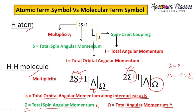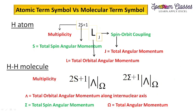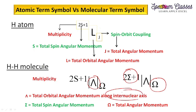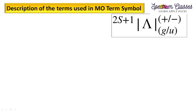I am going to explain the orbital angular momentum first, then the spin angular momentum, and after that Ω — the total electronic angular momentum about the internuclear axis. A question that comes to mind: why are we talking about the internuclear axis? Why are we not simply talking about the total orbital angular momentum as we did for atomic term symbols? I will explain and answer all these questions now.